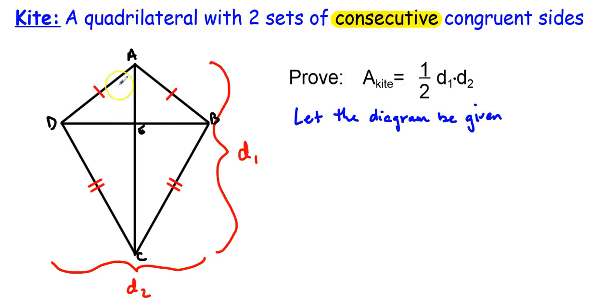Alright, so what we need to do first of all is show what these diagonals, or what this diagonal in particular, is doing. So, let the diagram be given. Again, we're going to look at triangle ADC and triangle ABC.